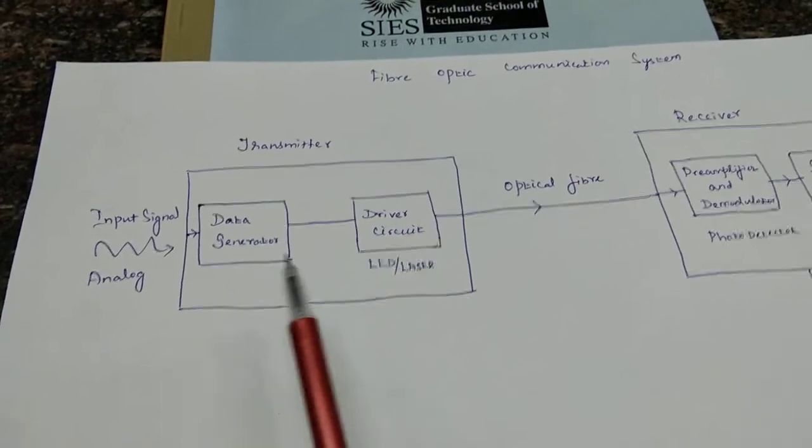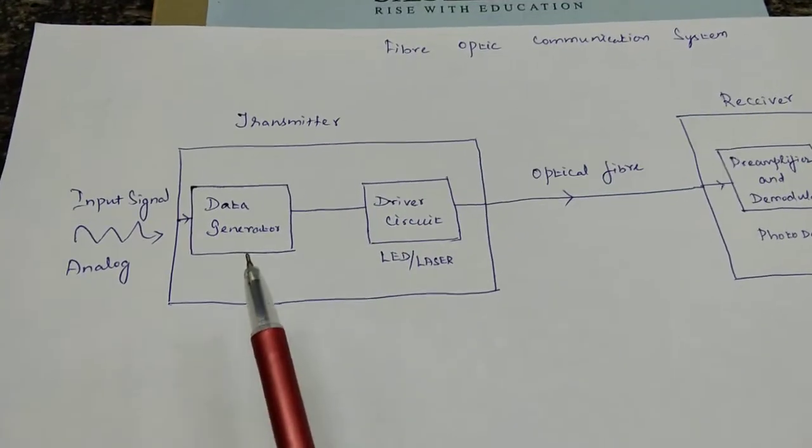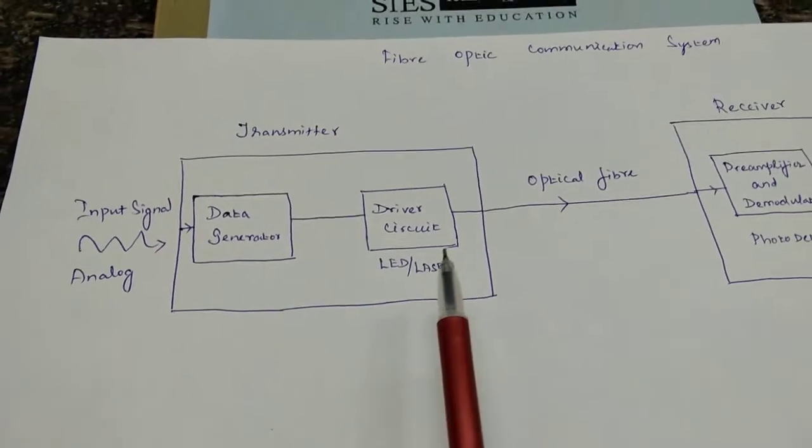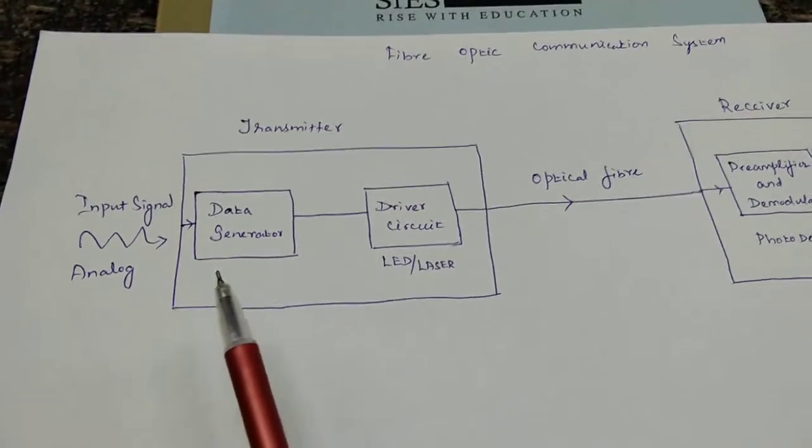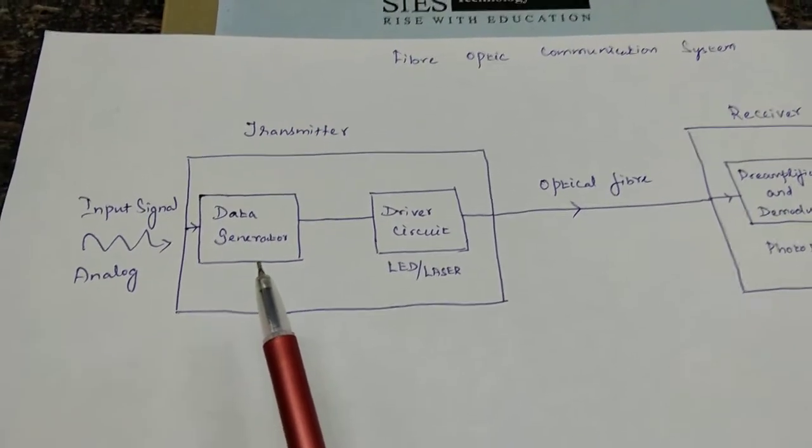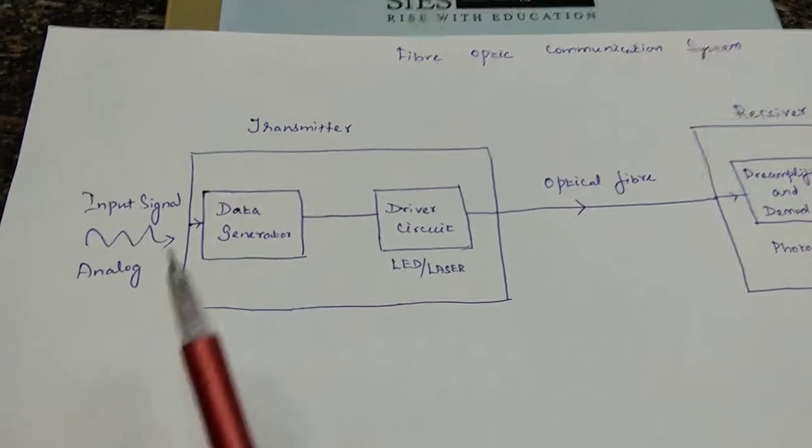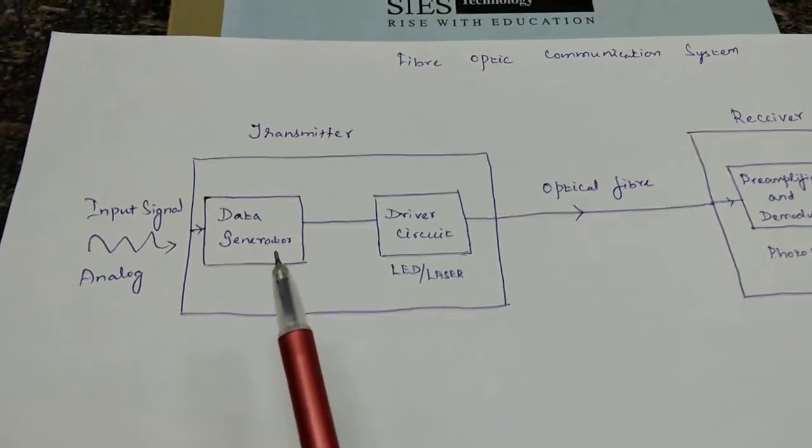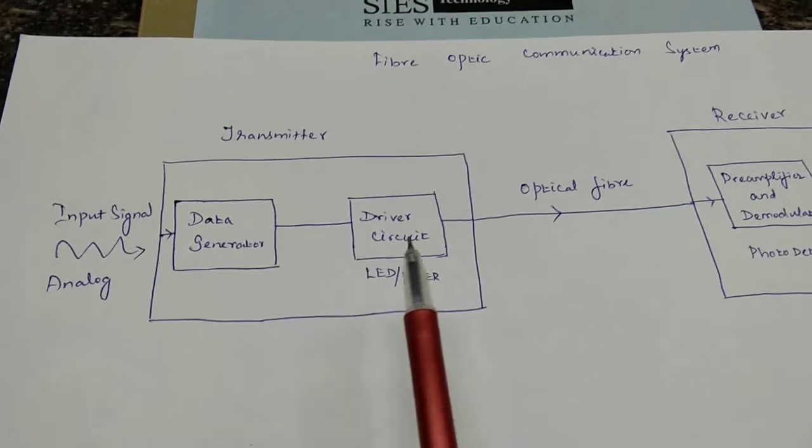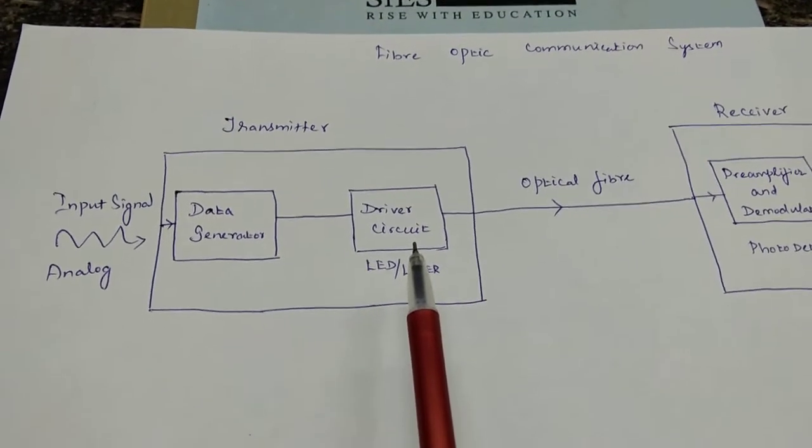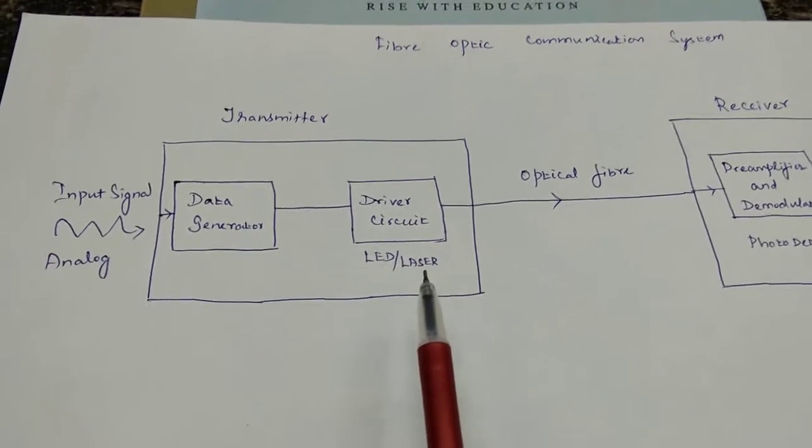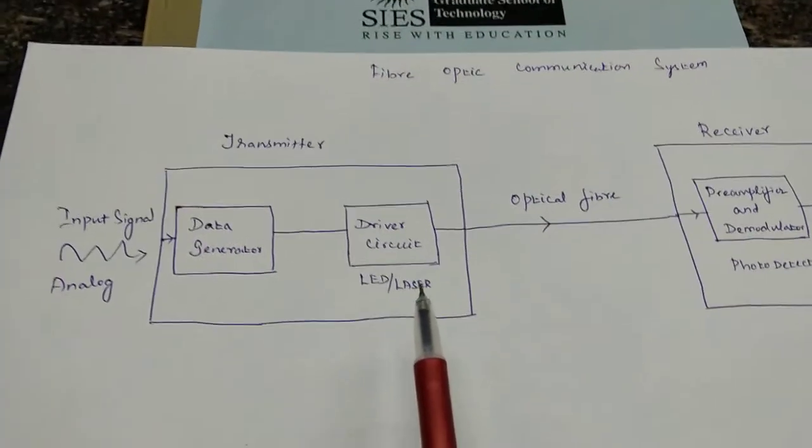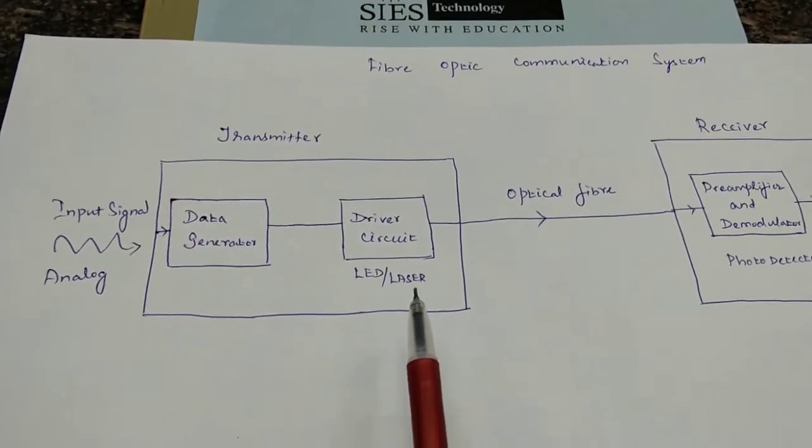This transmitter basically consists of two main parts: one is a data generator and a driver circuit. The function of this data generator is to convert this analog sound signal into electrical signal. This electrical signal, once it reaches this driver circuit which is basically nothing but an LED or a laser, would convert this electrical signal into light signal.